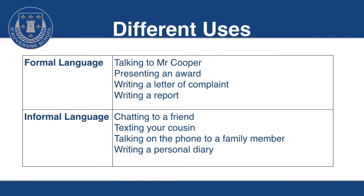Formal language could be used, for example, if you were talking to Mr Cooper, presenting an award, writing a letter of complaint, or writing a report. So normally in school, the types of work that you're doing, you're using your formal language — unless, say, when you were writing the diary of Jim when he was in the workhouse, you'd be using more informal language, because that's a personal diary. Other uses of informal language would be chatting to a friend, texting your cousin, talking on the phone to a friend or a family member, and writing a personal diary.